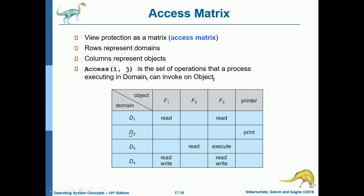Domain D3 has access to F2 (read) and F3 (execute). Domain D4 has access to F1 and F3 with read and write operations for both. If a process in domain D_i tries to do an operation on object O_j, the operation must be in the access matrix; if the cell is blank, it has no access to that object. The user who creates an object can define the access column for that object.